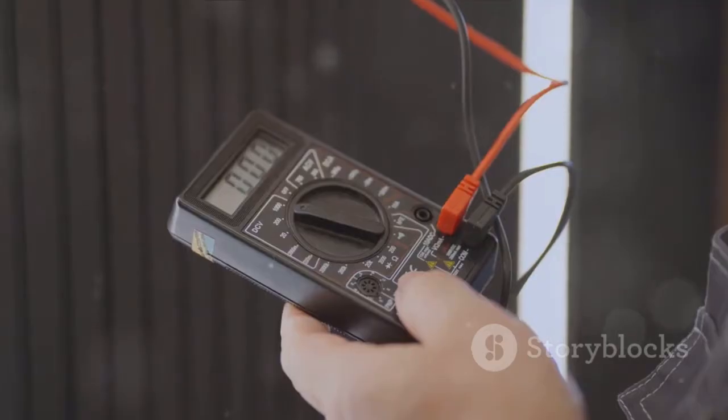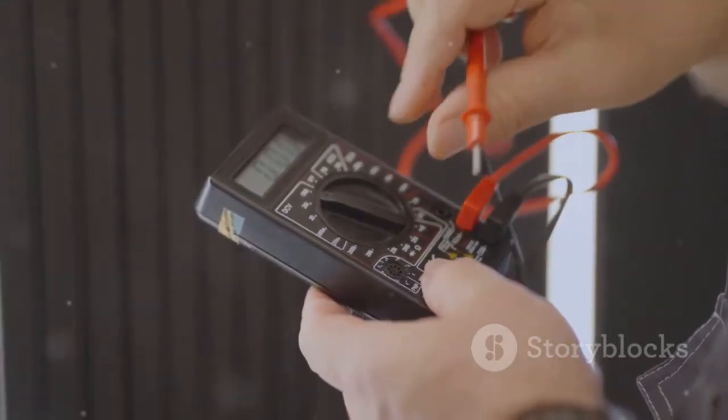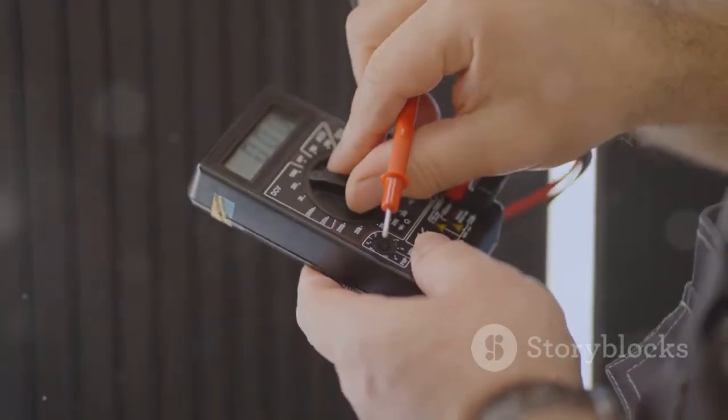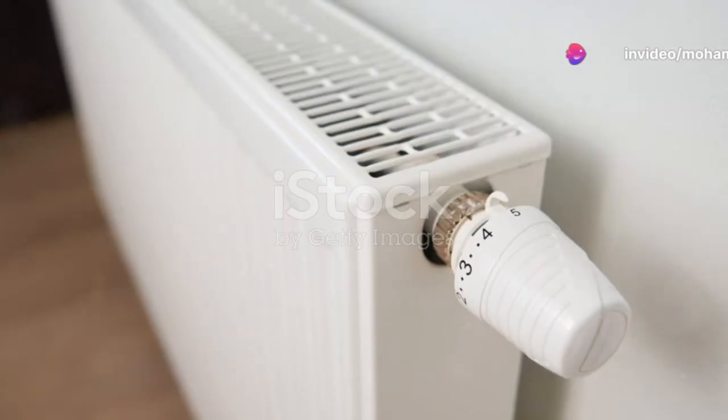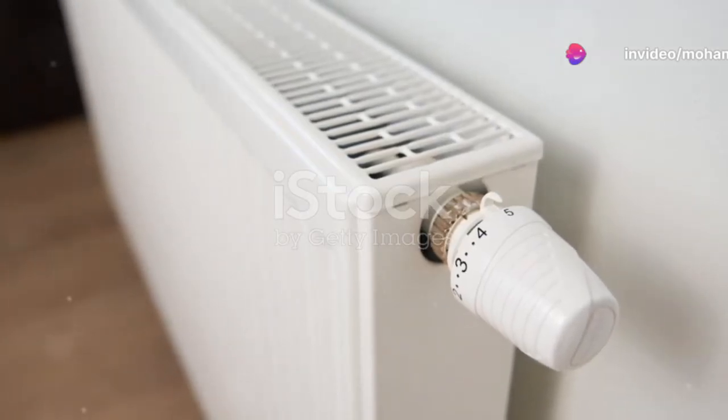As the contact moves from the start to the end of the track, or vice versa, it varies the resistance applied to the current flowing through the path. This variation in resistance alters the voltage applied to the load.